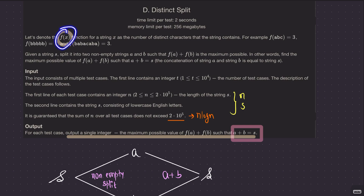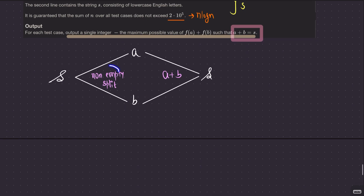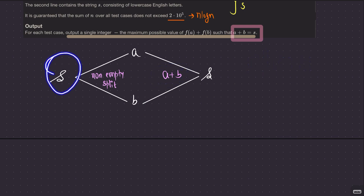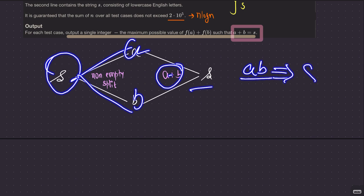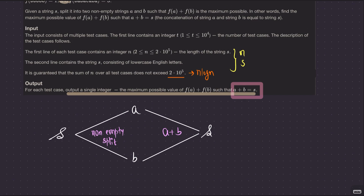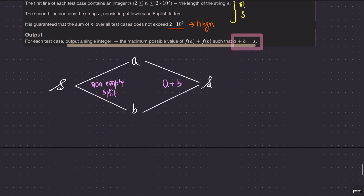In the question they have given this f(x). What is f(x)? It splits out the number of distinct characters in string x. They have defined this function as f, and what we have to do is — we are given a string s whose length is n, and we want to split it. A non-empty split should happen into a and b, such that after I concatenate a followed by b, I should be able to get s back.